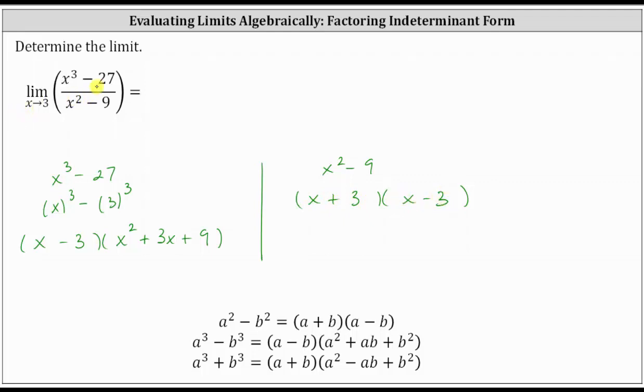So let's write the limit in factored form. We have the limit of the rational function, where in the numerator, we have a factor of x minus three, and a factor of x squared plus three x plus nine. In the denominator, we have a factor of x plus three, and a factor of x minus three, as x approaches three.